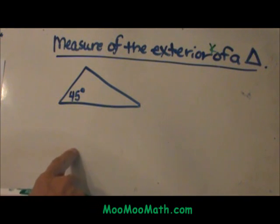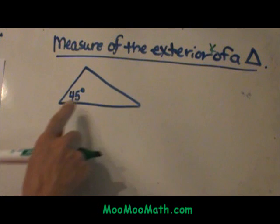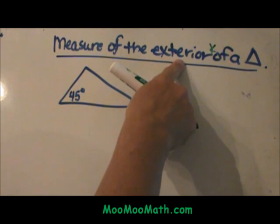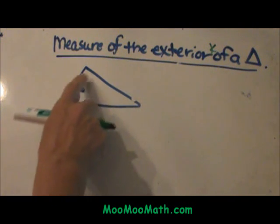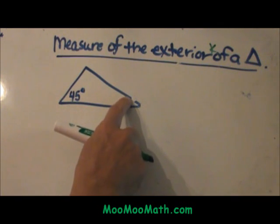We have a triangle right here and right now we only know one angle. First of all we have to decide what is an exterior angle and what is an interior angle. The interior angles are these three angles on the inside of the triangle.